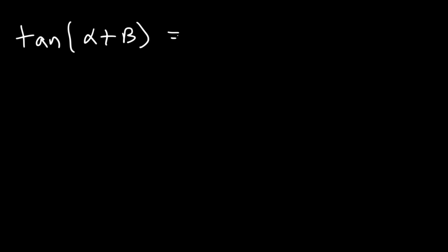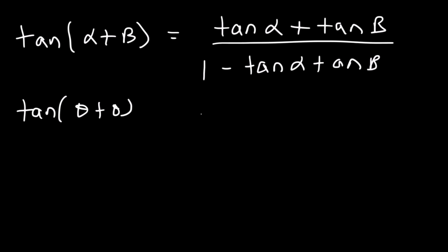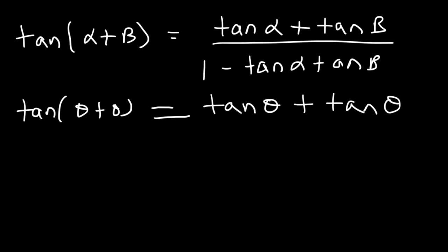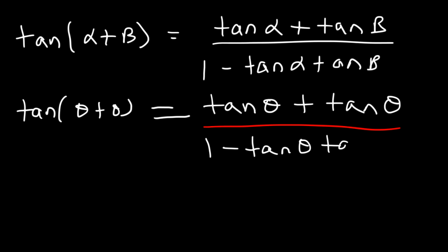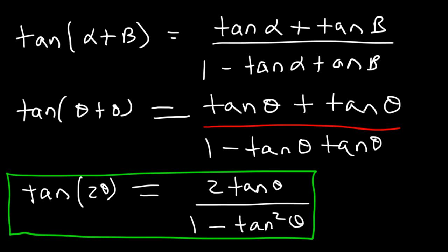Now let's move on to tangent. We know that tangent(α + β) = (tan α + tan β) / (1 − tan α tan β). So let's find tangent(θ + θ). This equals (tan θ + tan θ) / (1 − tan θ · tan θ). Tangent θ plus tangent θ is 2 tangent θ, and tangent θ times tangent θ is tan² θ. So the double angle formula for tangent is: tan 2θ = 2 tan θ / (1 − tan² θ). Make sure you write down those three formulas because we're going to use them soon.